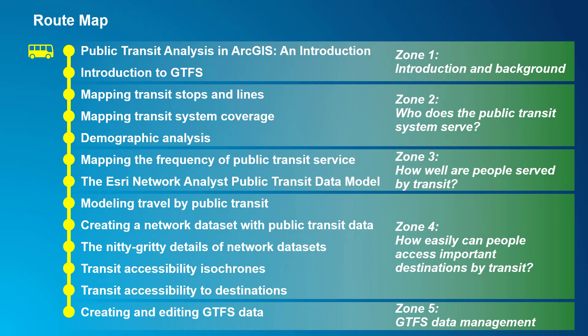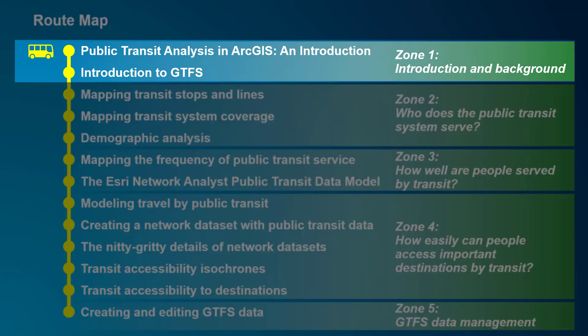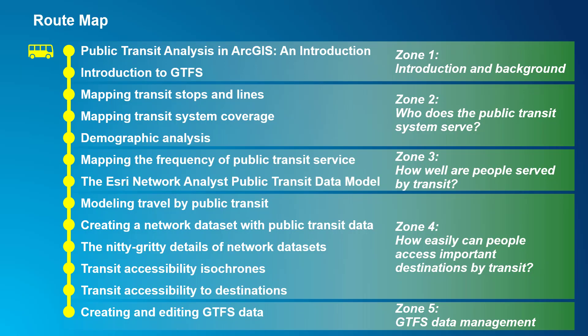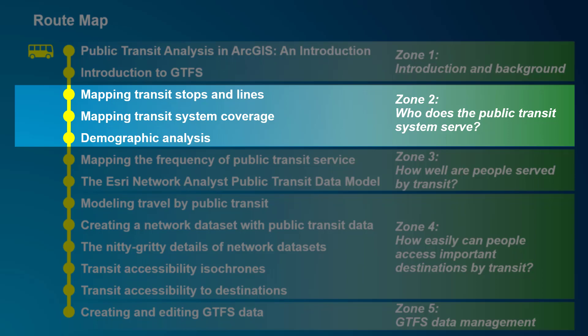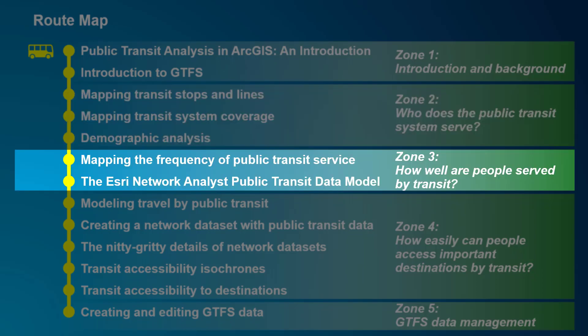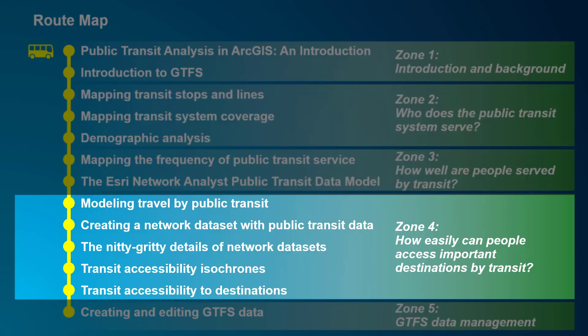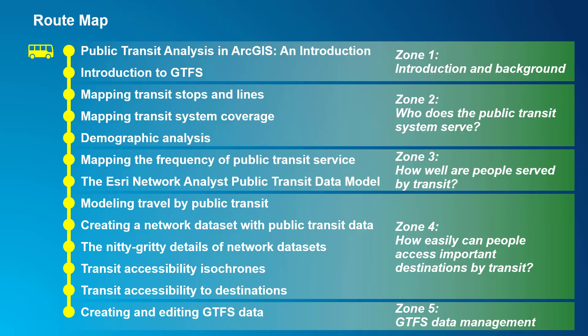This will be our system map for the series. We're starting with some introduction and background about public transit analysis in ArcGIS and about GTFS public transit data. Then the bulk of the series will focus on how to use your public transit data to answer a series of essential questions: Who does the public transit system serve? How well are people served by transit? And how easily can people access important destinations by transit? To answer each of these questions, we'll dive into the tools available in ArcGIS and some best practices for using them.